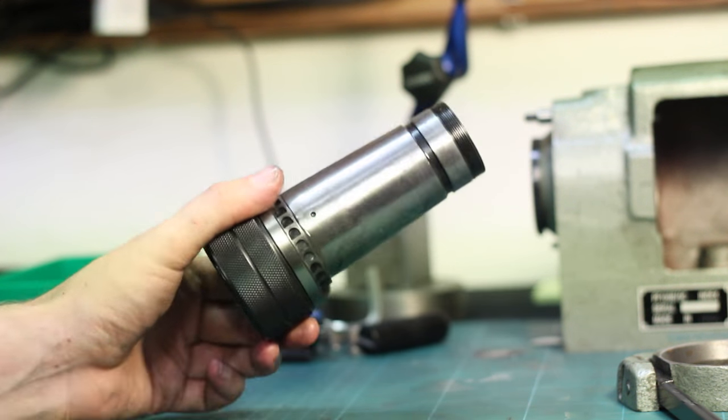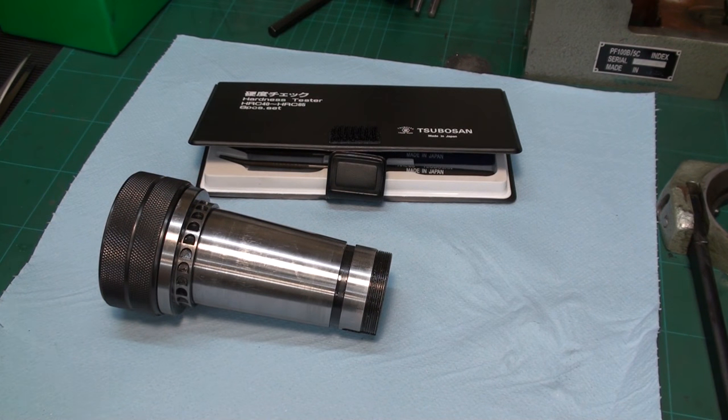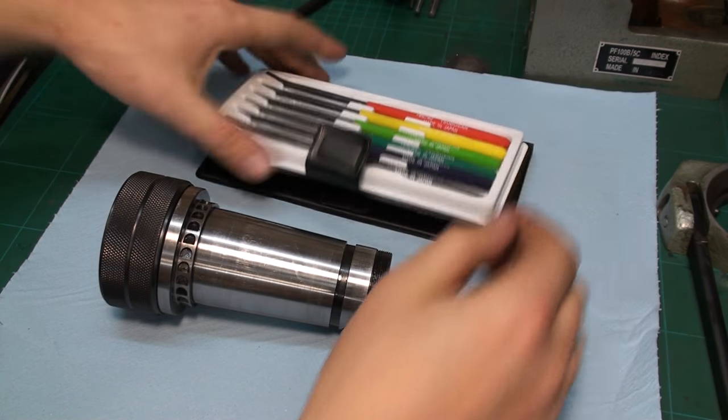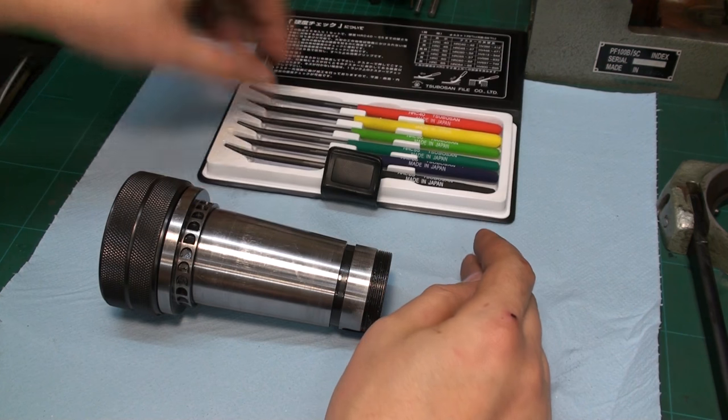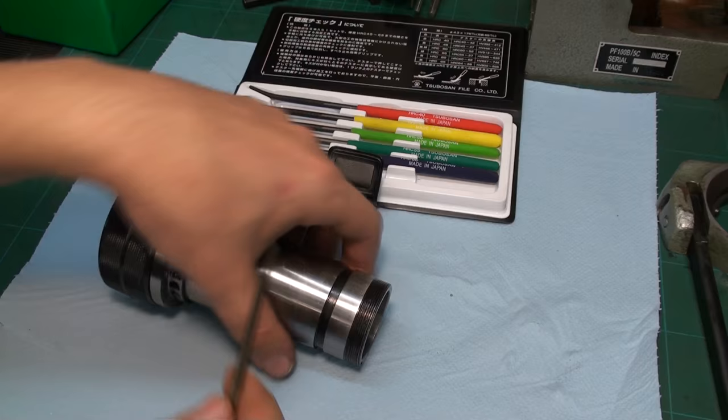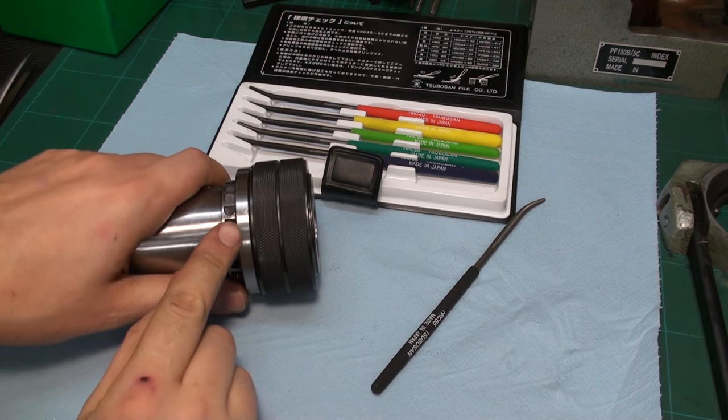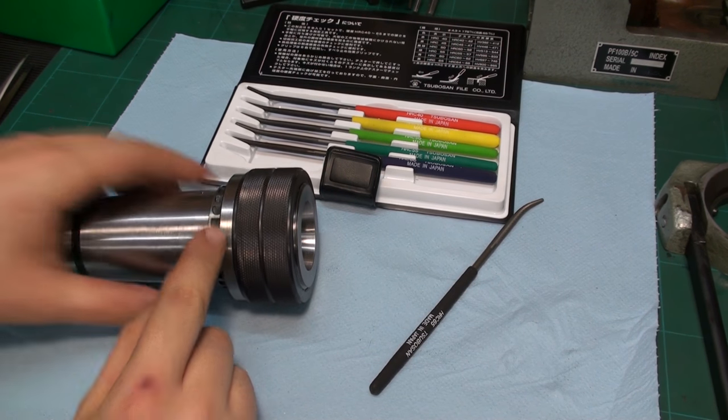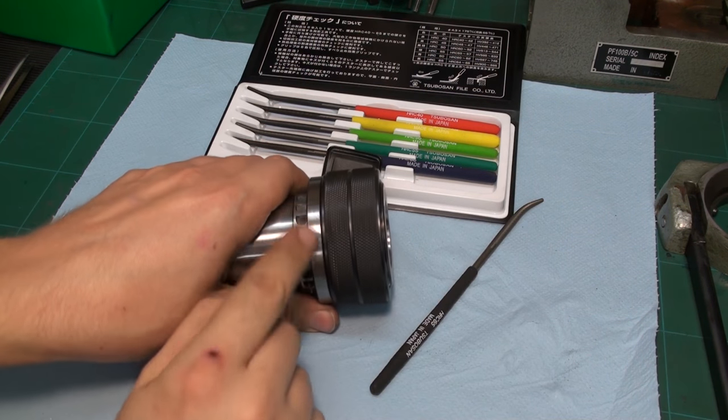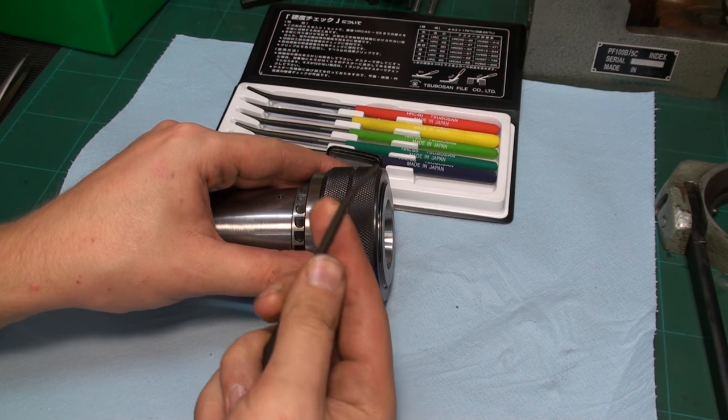Okay, let's see if we can check for hardness on the spindle. I have my hardness testing files. And we start with the 65 Rockwell file, which will grab, I'm sure. I'm using this diameter here for checking because this is no functional surface. So, 65 grabs.